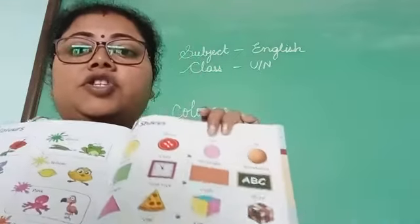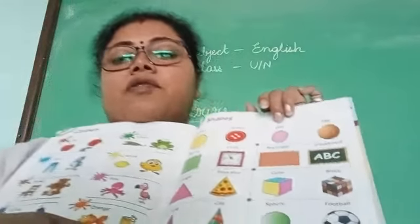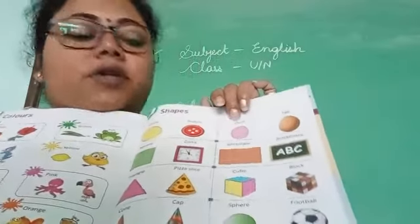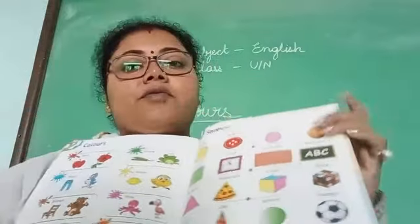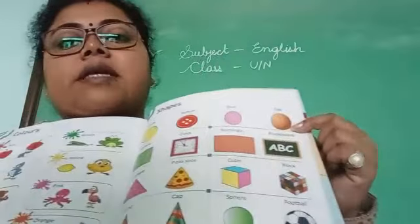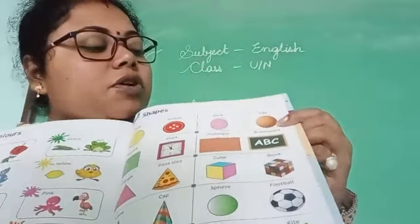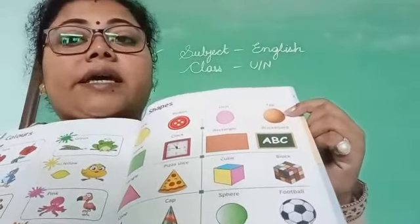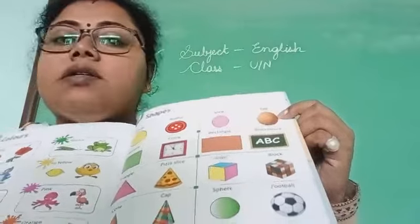Next, this shape is known as oval. What is the oval shape thing? Egg. What is the example of oval? Egg.